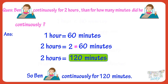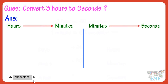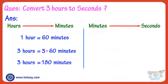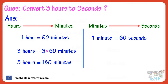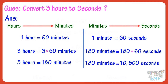Now let's solve another question. Convert 3 hours to seconds. We have to convert hours to seconds. Let's first convert hours to minutes, and then minutes to seconds. 1 hour equals 60 minutes, so 3 hours equals 60 multiplied by 3, equals 180 minutes. Now let's convert minutes to seconds. 1 minute equals 60 seconds, so 180 minutes equals 180 multiplied by 60, which is 10,800 seconds.